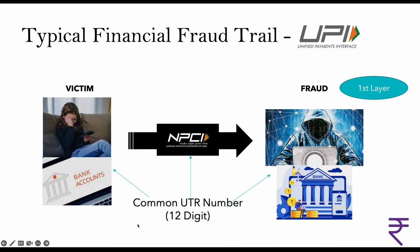The UTR number that is generated is a unique number, although in some cases it may be replicated or repeated. This UTR number is held by three parties: the victim's bank, NPCI, and the beneficiary bank — which is the fraudster's bank. You can search using the UTR number with any of these three entities. Any financial trail involves a debiting bank, a crediting bank, and a payment facilitator.